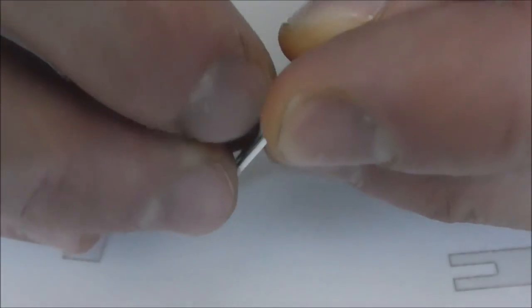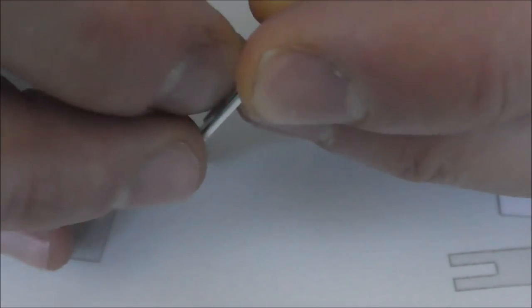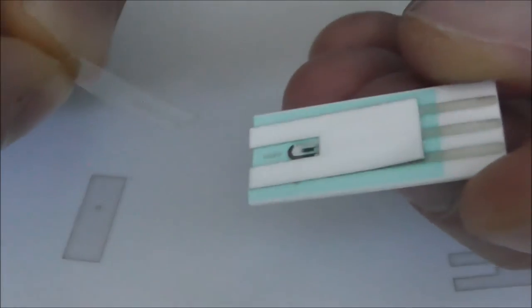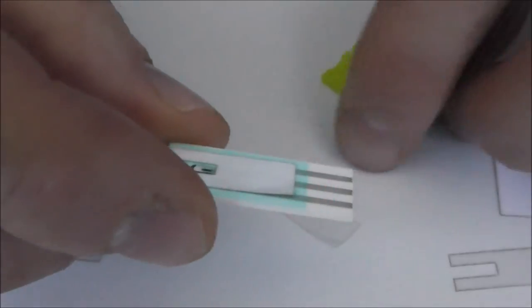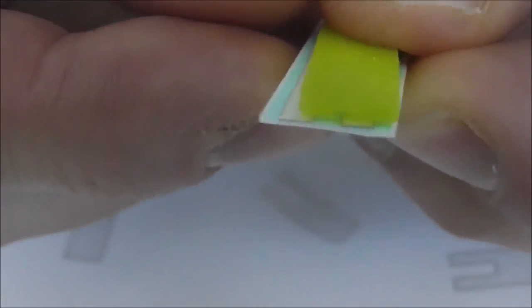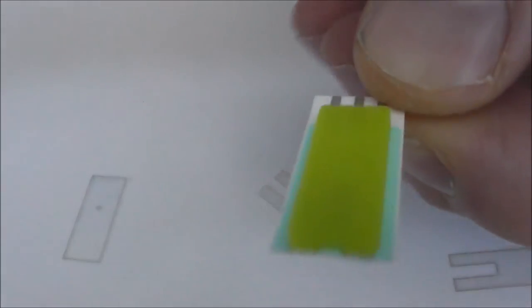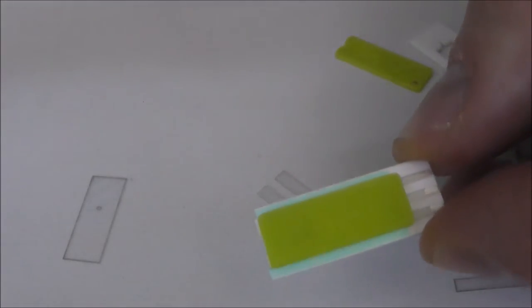Now what I'm going to do is peel off, I've peeled off another backing layer and I'm now going to make the sensor by adhering this to there. So I'm adhering this to there and there we are, we've now, once I've pushed that down, now we've made an end fill sensor. Okay, simple as that.